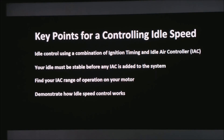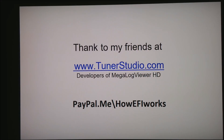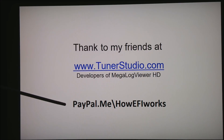So let's go through the key points for controlling idle speed. First, idle control uses a combination of ignition timing and idle air controller. Your idle must be stable before any IAC is added to the system. We went through finding the IAC range of operation for your motor — it will always be different for everybody's motor as you come up with different combinations of cam and whatever. And then I demonstrated how idle speed control works. In the next video I'll go through the settings to get all this to work. I want to thank my friends at tunerstudio.com, the developers of Megalog Viewer HD that I use to tune almost all of these motors. Should you get the desire to help me stay motivated to make more videos, you can always hit paypal.me/howefiworks. Thank you for watching.